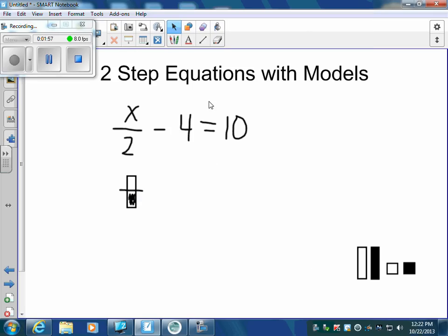I have a minus 4. So that's going to be 4 negative tiles. And all of that is going to equal 10 positive tiles. So this balance says x divided by 2 with negative 4 tiles equals positive 10 tiles.